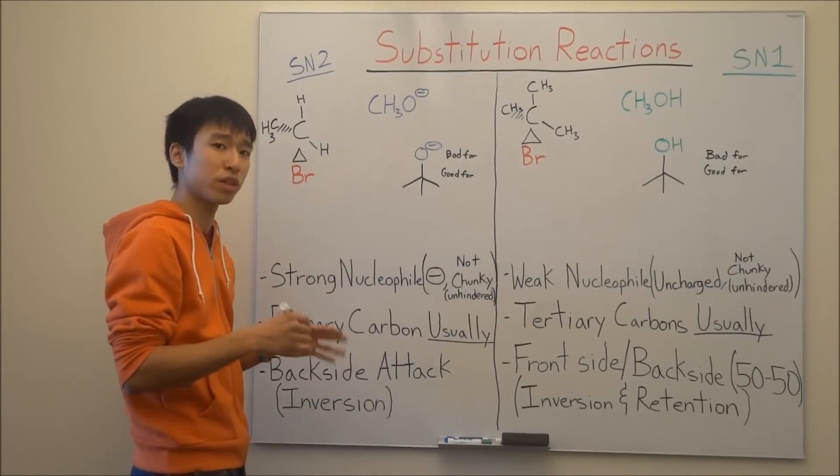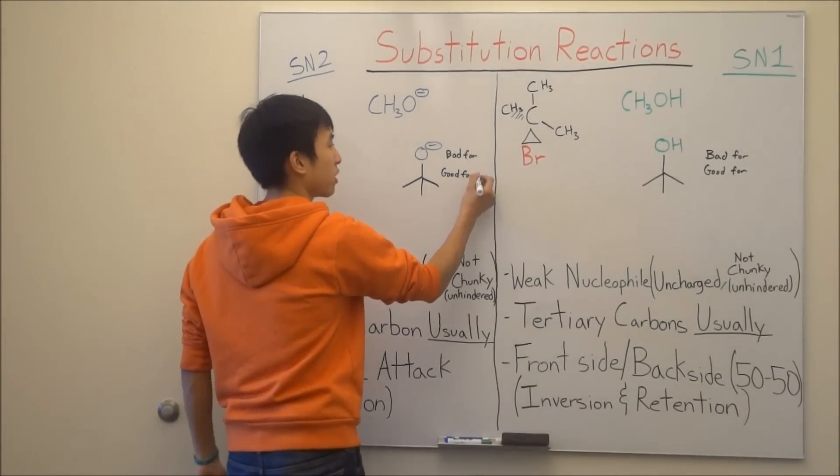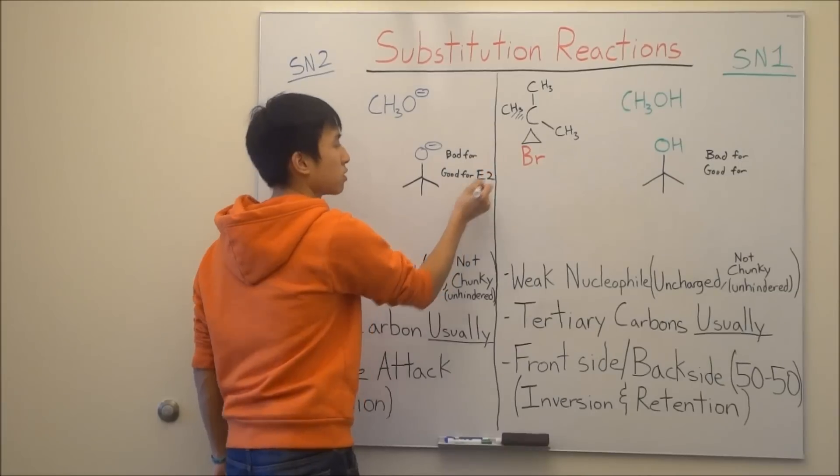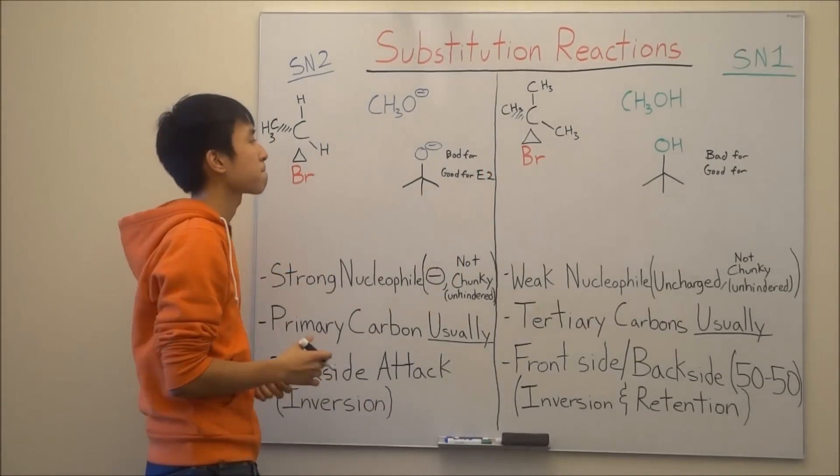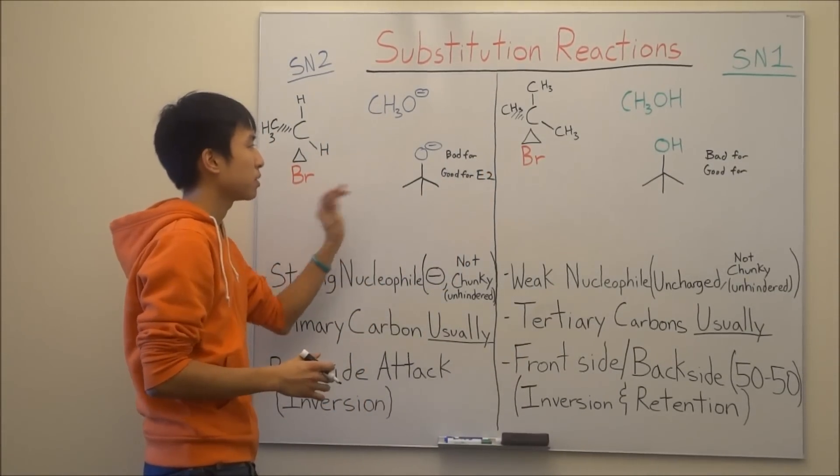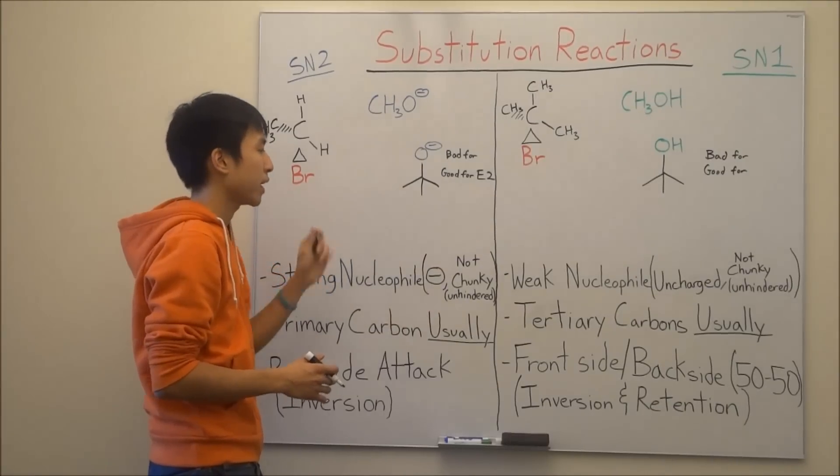But tert-butoxide is really, really good for elimination. I'll just write that in here, E. And it's also very good for E2 specifically, because it's a very strong base. But tert-butoxide, right? It's very, very chunky.